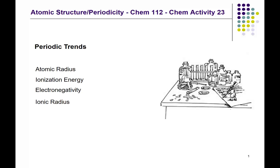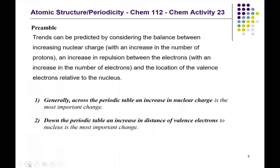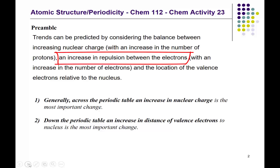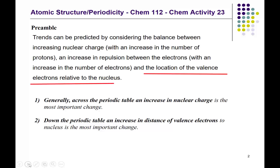Let's look at the underlying reason for these periodic trends. At the top of your sheet in CHEM activity number 23, the preamble states that the trends can be predicted by considering the balance between increasing nuclear charge — because in going from one element to the next, we increase the number of protons in the nucleus — an increase in repulsion between the electrons, and the location of the valence electrons relative to the nucleus.